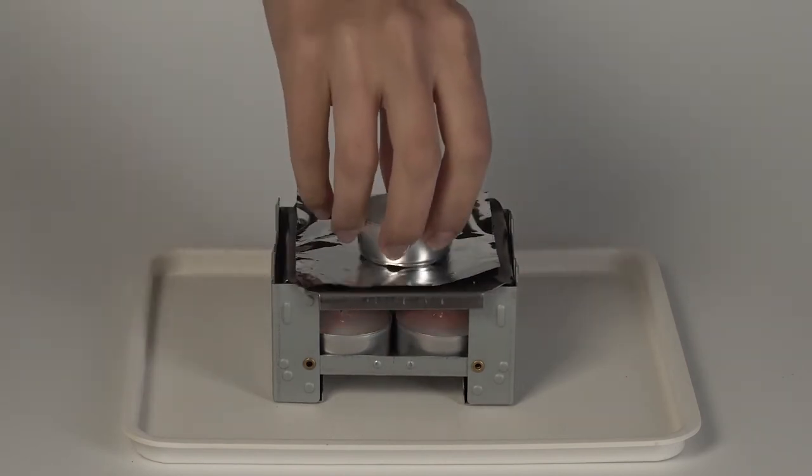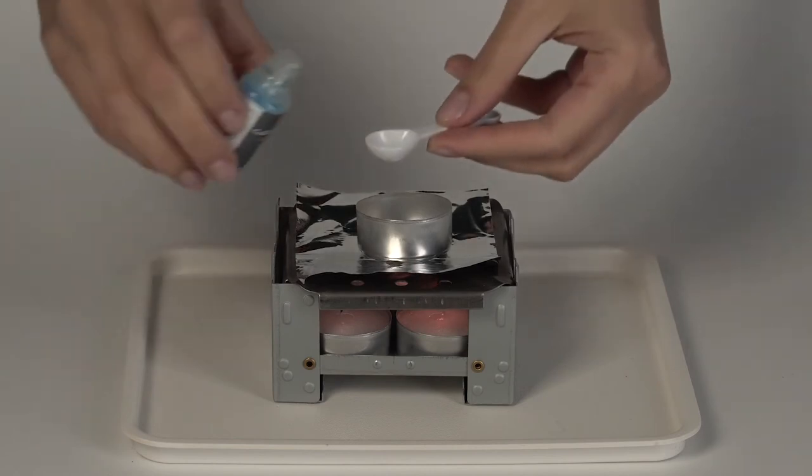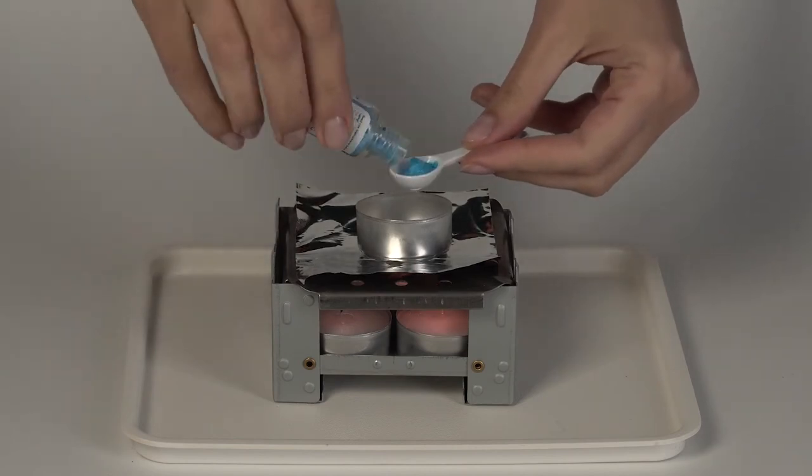Set an empty mold on top of the foil. Pour one big spoonful of copper sulfate into the mold.